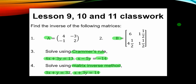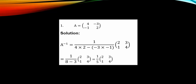Let us see the solution to these four problems. For number 1, we have to find the inverse. For a 2 by 2 matrix, the inverse is 1 over the determinant. The inverse is denoted as this.